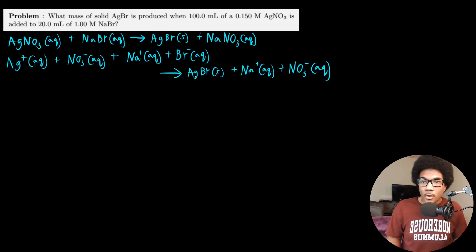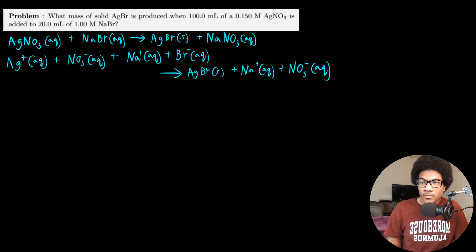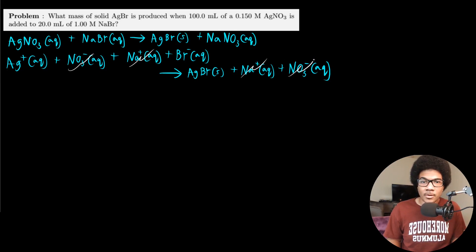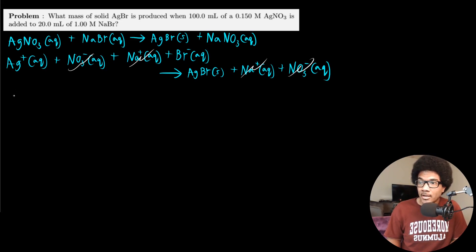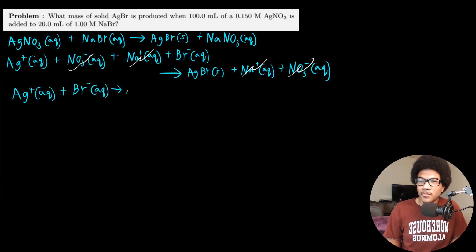We know that solid silver bromide is our product. Looking at which ones aren't really participating: the nitrate anion stays the same in reactants and products, and the sodium cation is also not changing. So our spectator ions are the nitrate and the sodium — those can go away, and we can write our net ionic equation: silver cation interacts with the bromide anion to give you silver bromide solid.